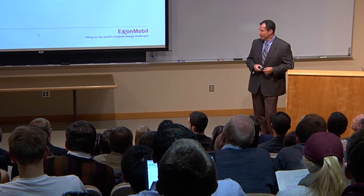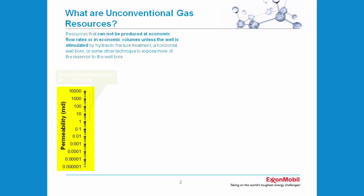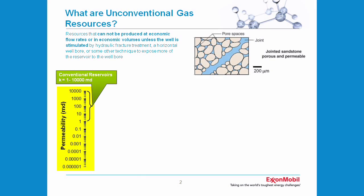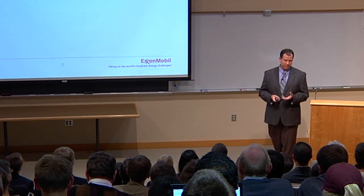You've heard shale gas, you've heard unconventional. What does unconventional mean? Unconventional resources are those that can't be produced at economic flow rates, in economic volumes, unless a well is stimulated by hydrologic fractures, a horizontal well bore, or some other technique to expose more of the reservoir to a well bore. These are rocks that aren't going to produce economically unless you do something to them.